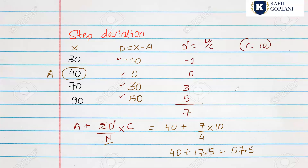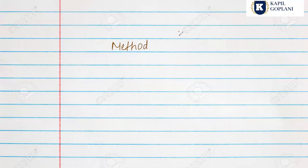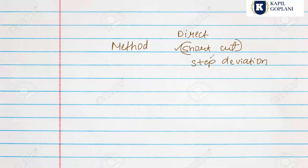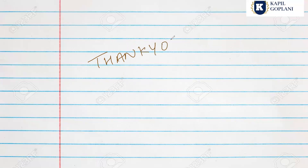In the exam, if a specific method is mentioned in the question, you must use that method. If no method is specified, you can use the direct method, short-cut (assumed mean) method, or step deviation method — whichever is suitable. Today's session ends here. Do subscribe to my channel for further updates on economics and statistics, and hit the like button if you liked today's video.